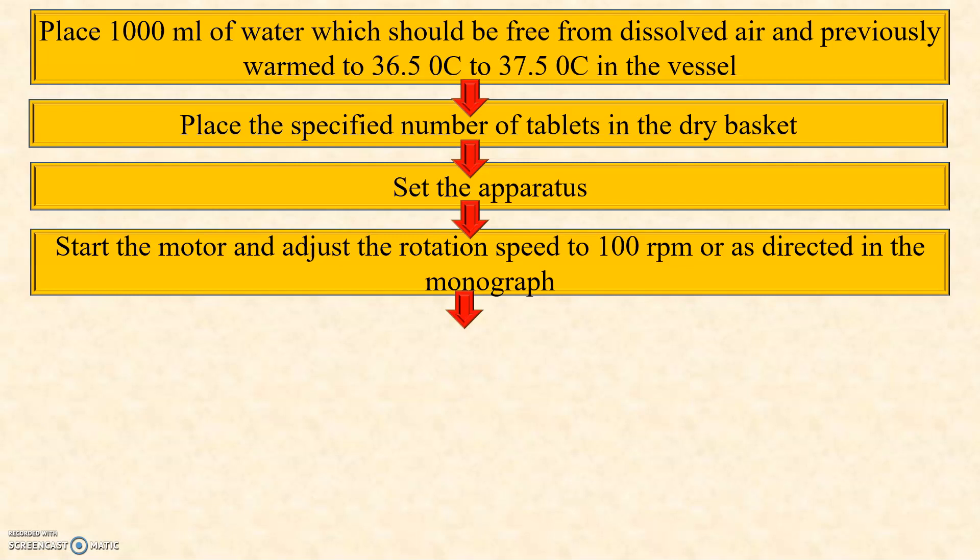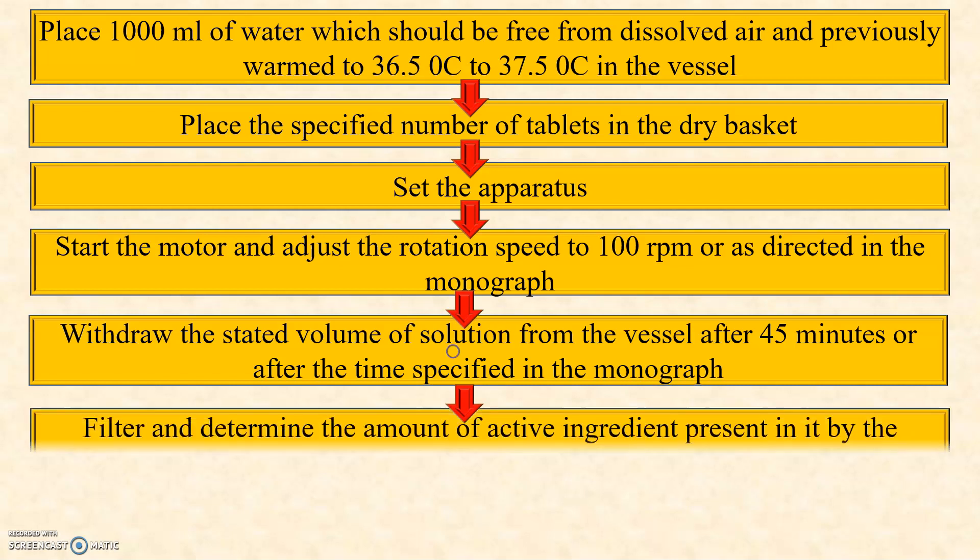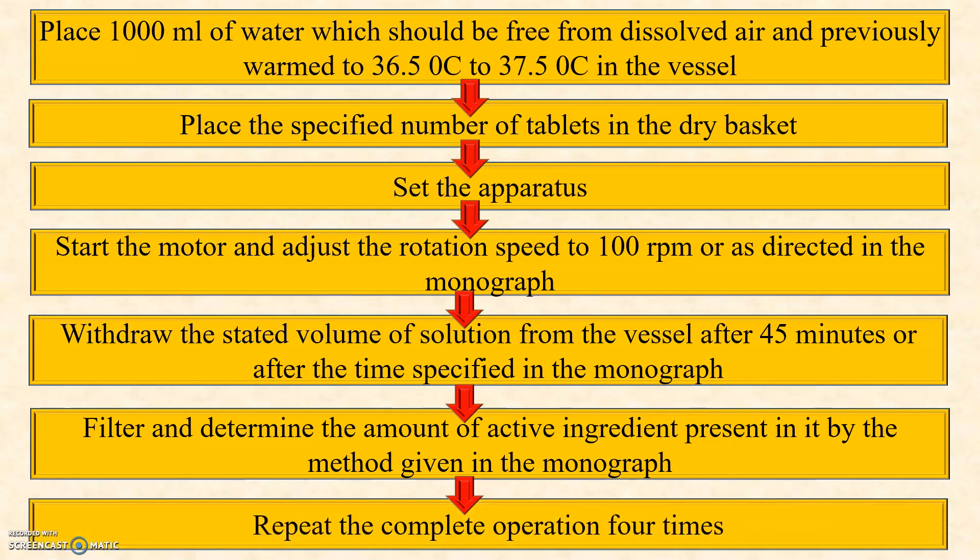Then start the motor and adjust the rotation speed to 100 rpm or as directed in the monograph. Then draw the stated volume of solution from the vessel after 45 minutes or after the time specified in the monograph. Then filter and determine the amount of active ingredient present in it by the method given in the monograph. Repeat the complete operation 4 times.